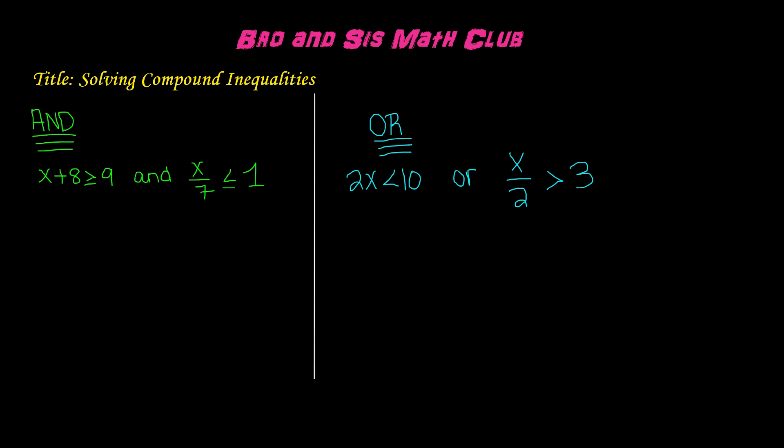For the 'and' compound inequality, your overall solution for both inequalities will be between the two points on the graph. However, for the 'or' compound inequality, it can go in opposite directions. Let's go ahead and solve these examples to understand this concept.